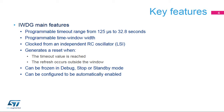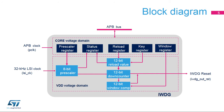This window feature is optional and not present in all Independent Watchdogs. It is possible to enable automatically the Independent Watchdog after a system reset. It is possible to define the behavior of the Independent Watchdog in debug, stop, or standby mode. The Independent Watchdog registers are located in the core voltage domain, while its functions are in the VDD voltage domain.